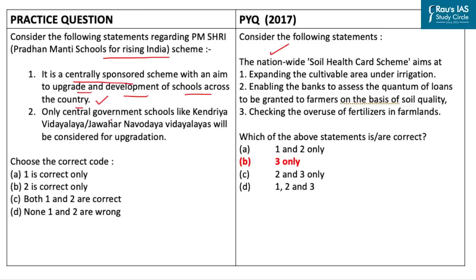Moving on to the second statement: it says only the central government schools like Kendriya Vidyalaya and Jawahar Navodaya Vidyalaya will be considered for upgradation. This statement is wrong, because PM Shri will not only cover Kendriya Vidyalaya or Jawahar Navodaya Vidyalaya, but will also consider schools run by state governments or even local municipal corporations. So the correct answer is option A — only statement 1 is correct.